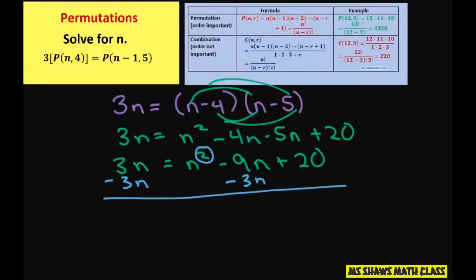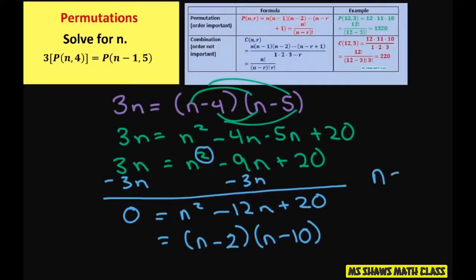So we get 0 equals n squared minus 12n plus 20. This can be factored as n minus 2 and n minus 10. So our n equals 2 and n equals 10.